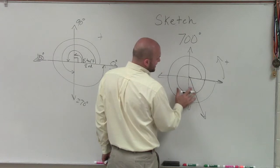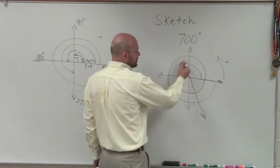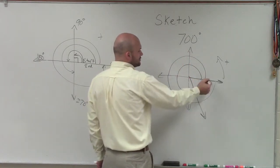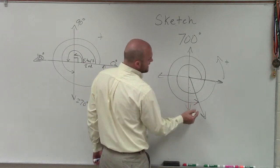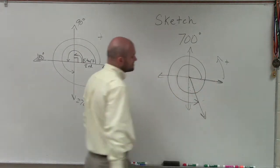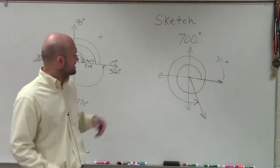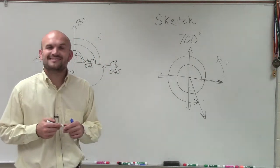But you can see that's going to be where my angle is going to go. So it's going to start here, rotates around one revolution, and then continues on almost to a second revolution. But now it's going to stop 60 degrees short of a second revolution. So that's how you sketch your angle, 700 degrees. Thanks.